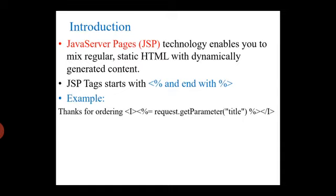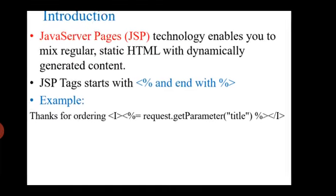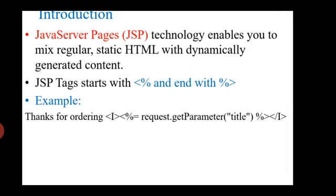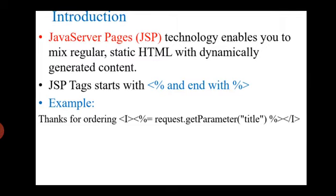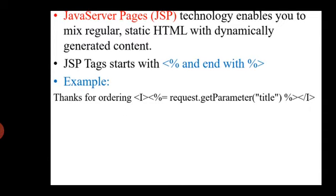What is JSP? JSP stands for Java Server Pages technology, which enables you to mix regular static HTML with dynamically generated content. The content usually starts with HTML and contains scripted elements. The syntax used encloses tags within angle bracket percent symbols — opening with less-than percent and closing with percent greater-than.